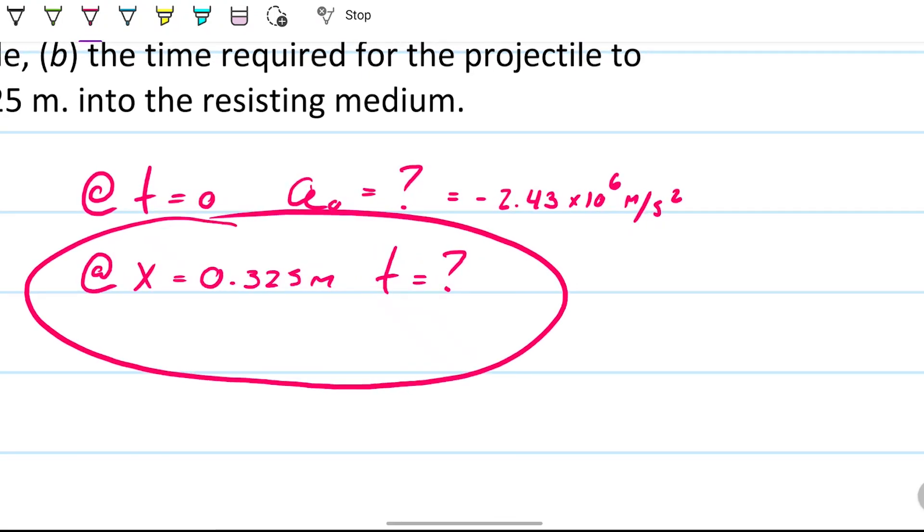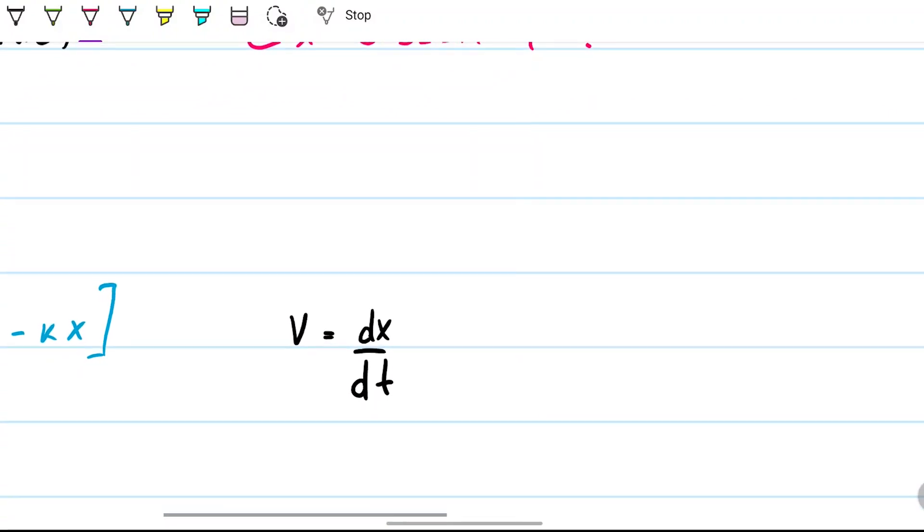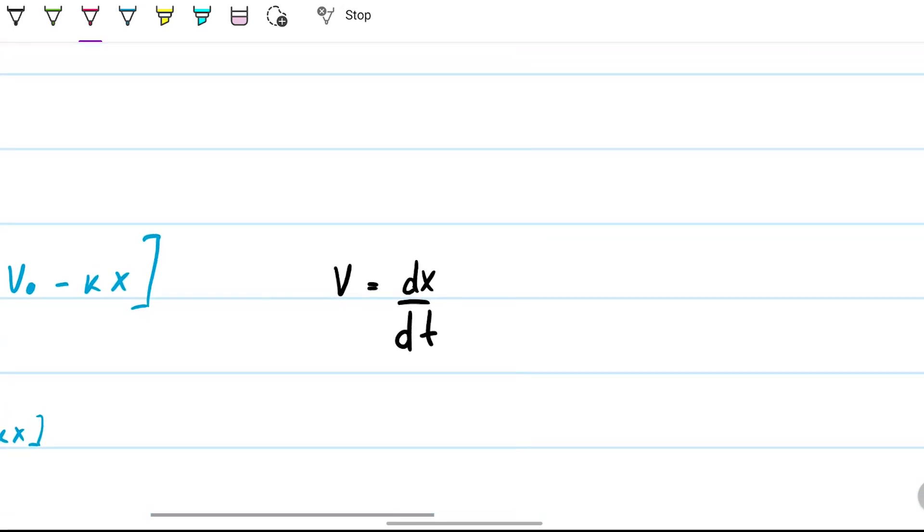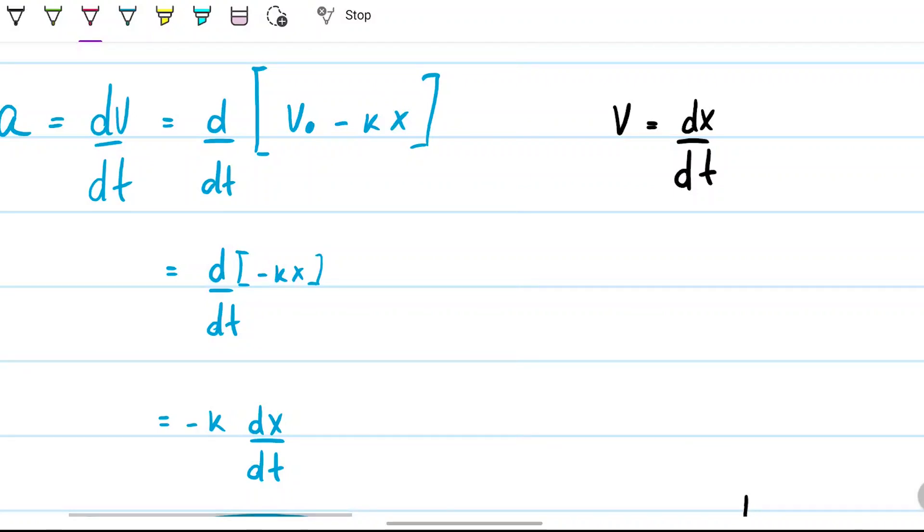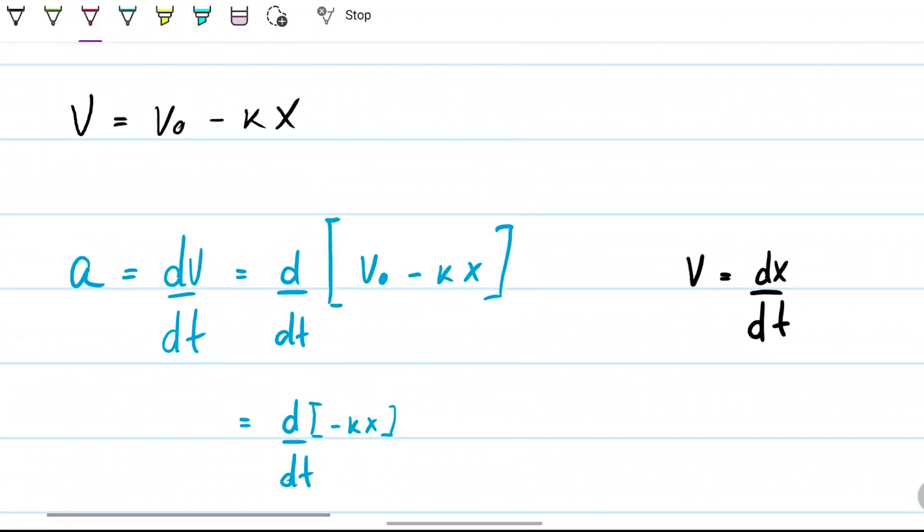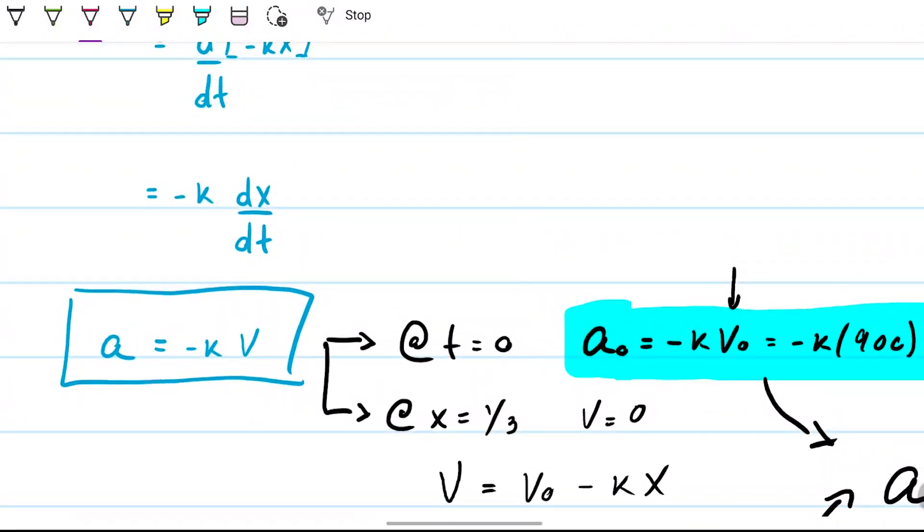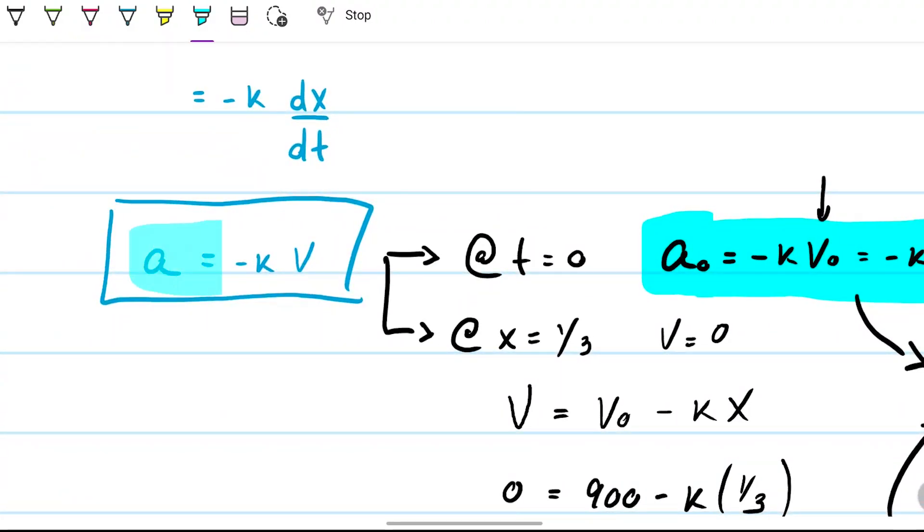Next question: what is the time when the position is 0.325? Note that there's two ways to do it. Let me think about the easiest way. We have a relationship here between the velocity. I think the easiest way to do this would come from this realization here. I'm going to copy this.